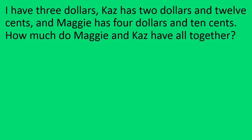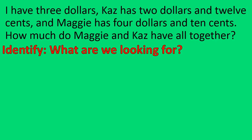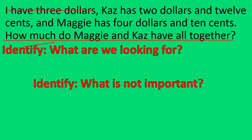Let's move on to question number two. I have $3. Kaz has $2.12 and Maggie has $4.10. How much do Maggie and Kaz have altogether? Now this is a bit of a trick question. What am I looking for? How much money Maggie and Kaz have? I am not looking for how much money I have. So the fact that I have $3 is an extra piece of information — it is a number, but it's not a number we're going to use.